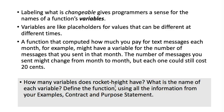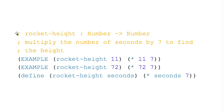How many variables does rocket-height have? What's the name of each variable? Now it's time to define the function — we have everything we need. Rocket-height has one variable: the number of seconds. We've got our contract, our purpose statement, and two examples. We can see what changed, and that represents the number of seconds. To make our function definition, we replace 'example' with 'define', use the name of the function, and instead of a number, we use a variable called 'seconds' to represent the input, then multiply that variable seconds by seven.